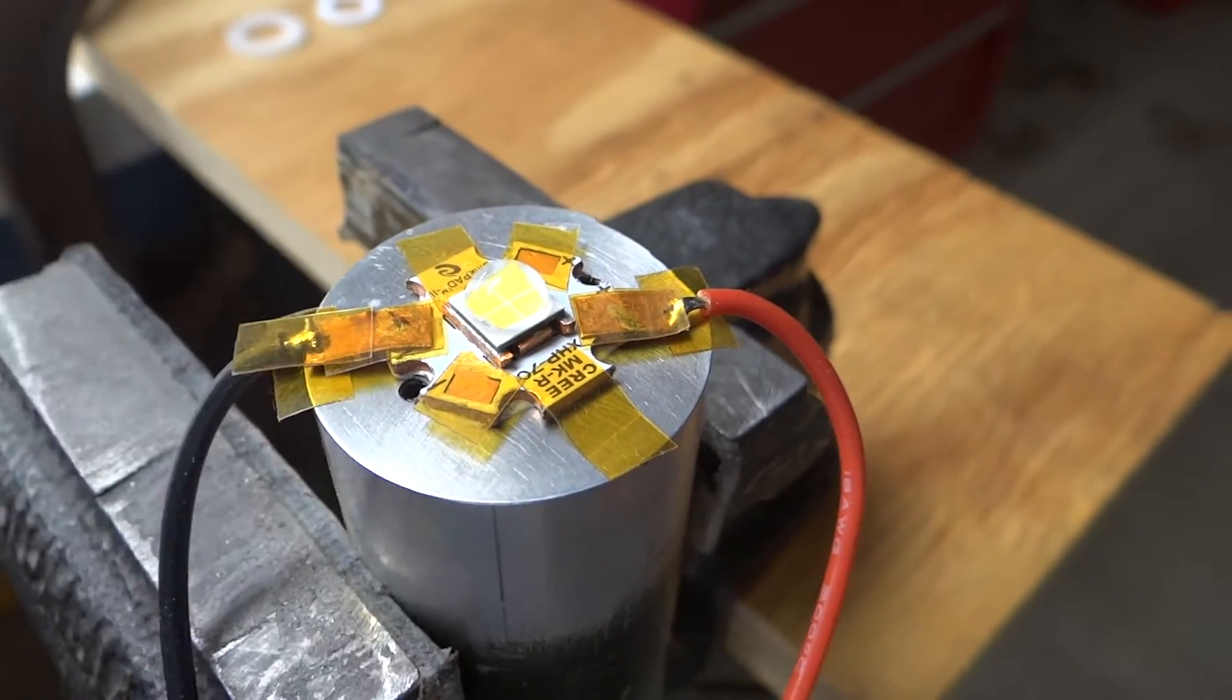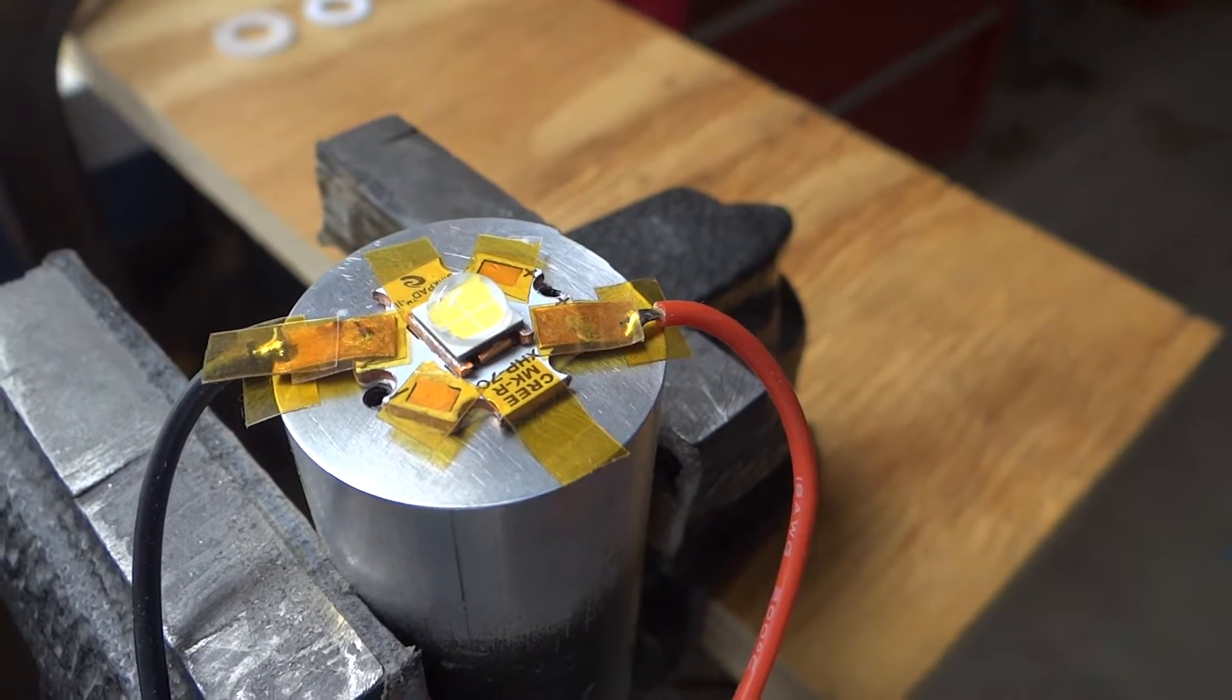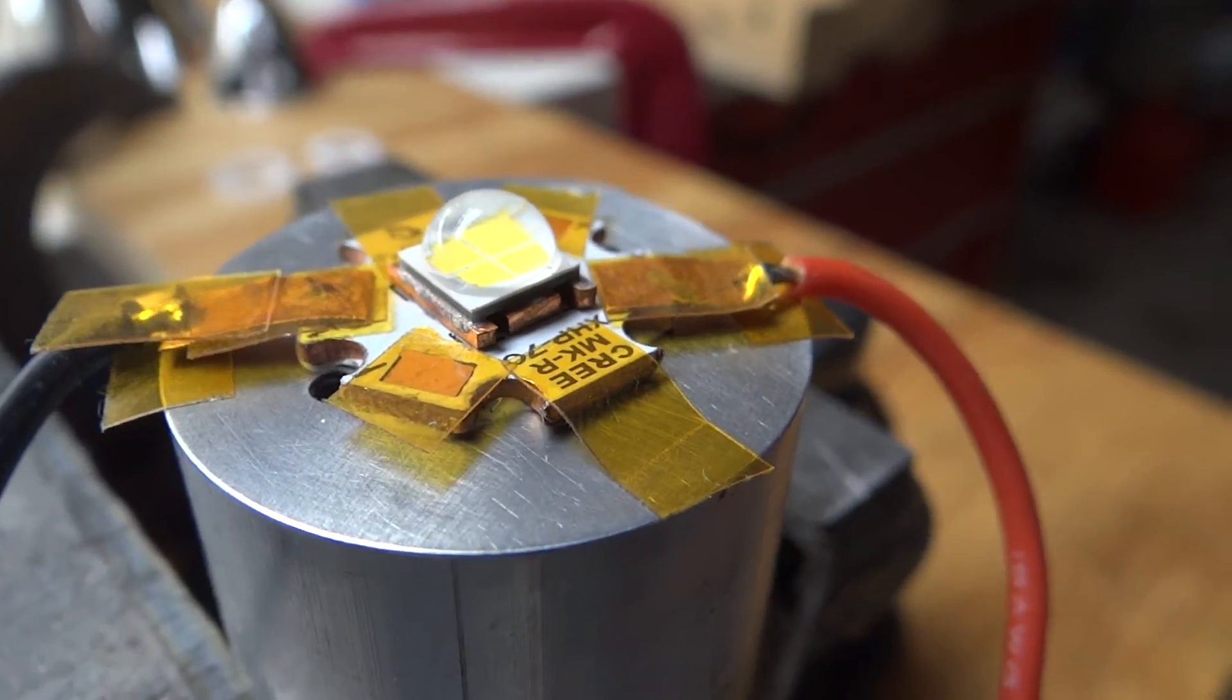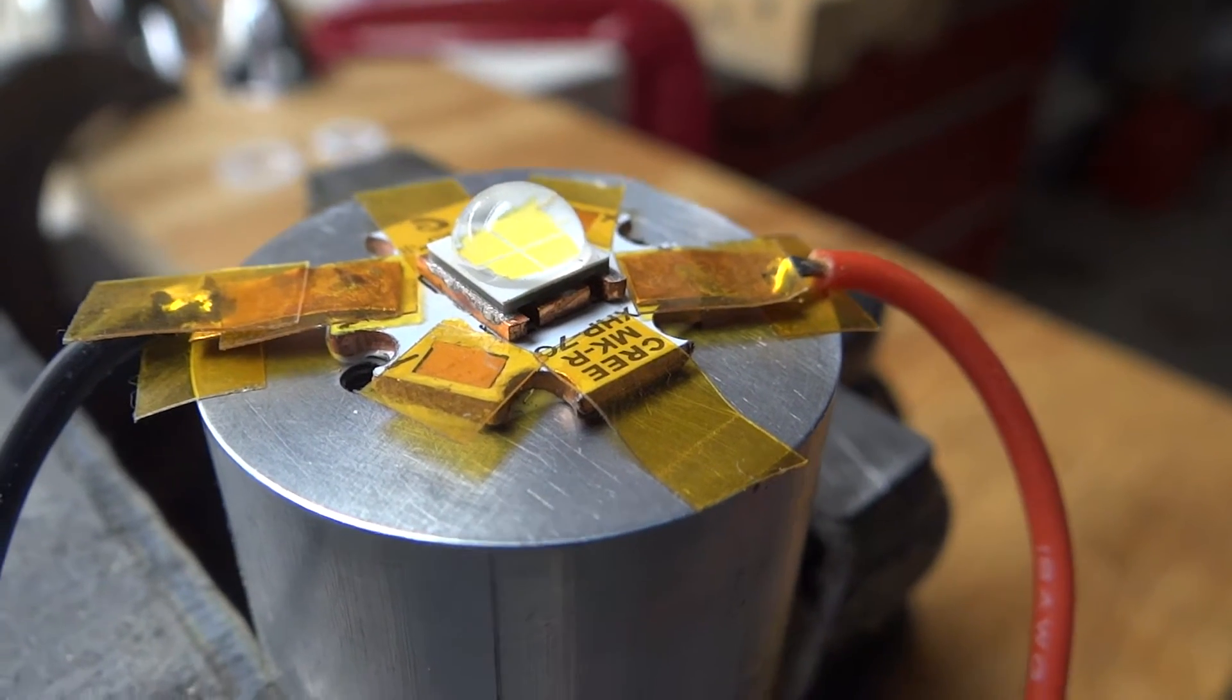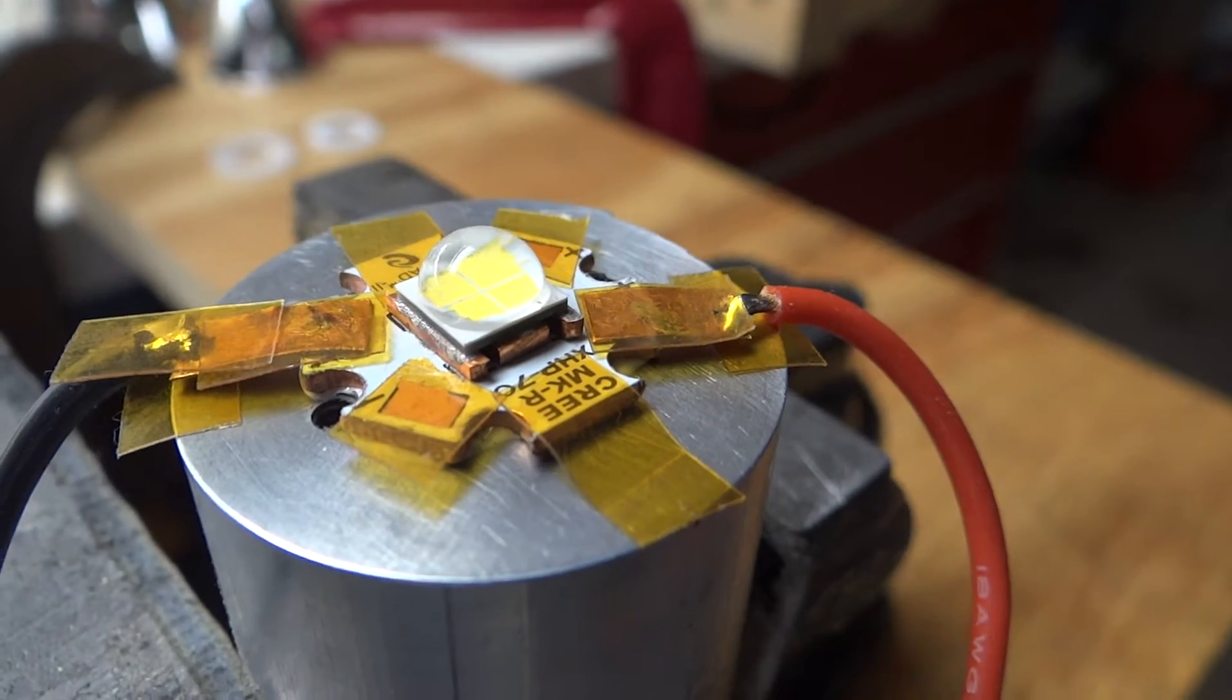Anyways, I've soldered the wires outboard so that I can set reflectors on top of it. I've also raised the LED off the star using pieces of copper so that I can set reflectors down below the LED base.